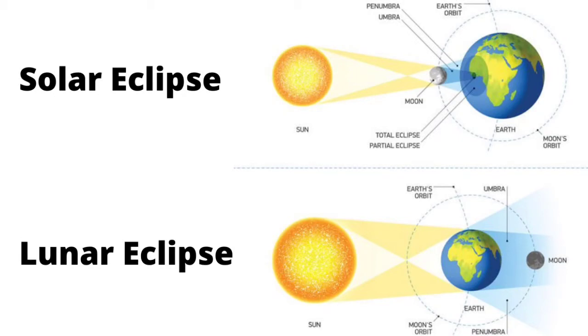Solar eclipses are of three types: Partial, when only a portion of sunlight is blocked; Annular, when the sun can be seen around the edges; and Total, when the sun is completely blocked by the moon.